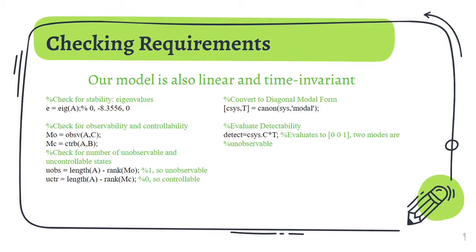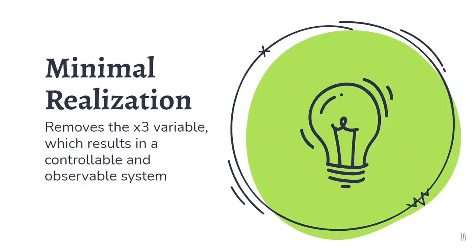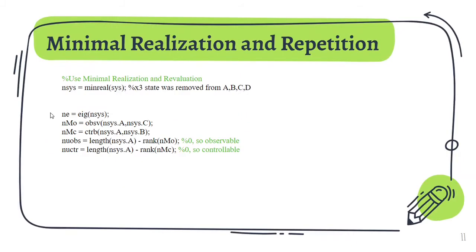Two states are unobservable. This is a problem as that means we cannot design a controller for this version of our bicycle model. However, we can use minimal realization. Minimal realization removes the x3 variable, reducing the matrix A from 3x3 to a 2x2. This automatically makes sure our system is controllable and observable. We can use MATLAB's minreal function to minimally realize our initial state-space model. Finally, we can redo our checks for our controller usability requirements.